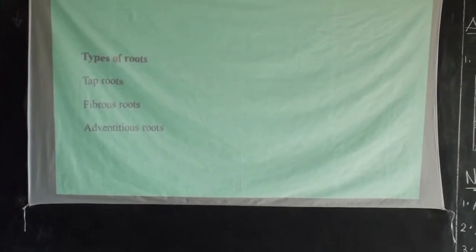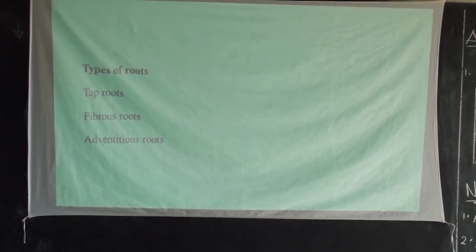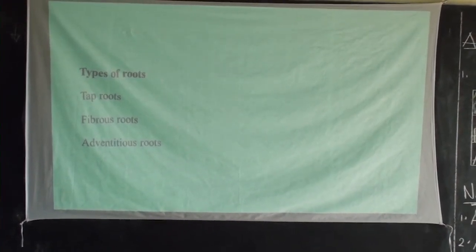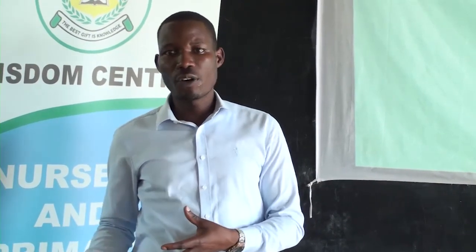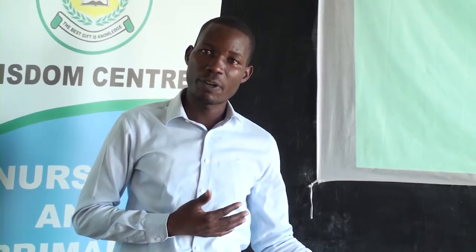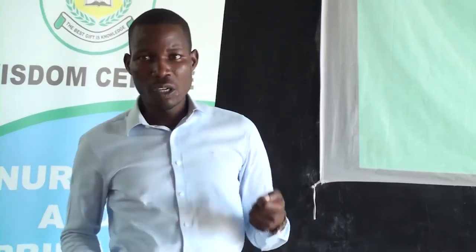That brings us to the end of our lesson today. We've looked at reproduction in plants, looking at asexual reproduction. For the sexual reproduction part, we have seen the use of reproductive cells — which are the ovules, the female reproductive cells, and the pollen grains, the male reproductive cells. We've looked at the parts of the flower and their functions.